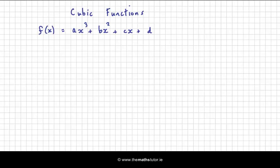First of all, a classic cubic function is of the form ax³ + bx² + cx + d, where a, b, c and d we call the coefficients — it's the number before the x term.